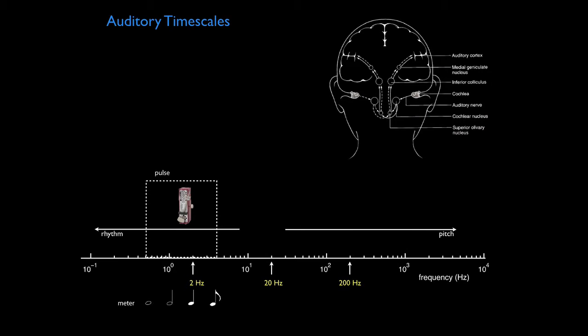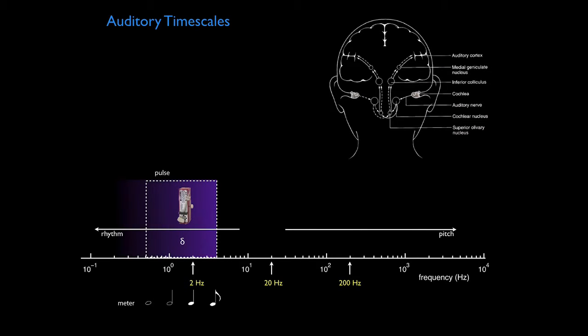Now the interesting thing that we can do is compare these to the frequencies at which the auditory system operates. So at cortical frequencies, and we were looking at cortical phase locking for rhythm, we see that the delta band corresponds very nicely with the frequencies we associate with musical pulse. And the theta band corresponds with frequencies that we think of as being subdivisions of the pulse.